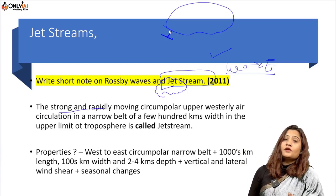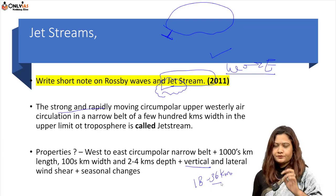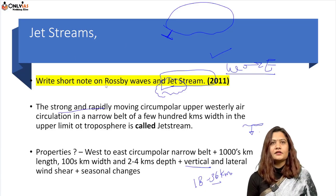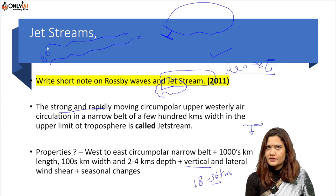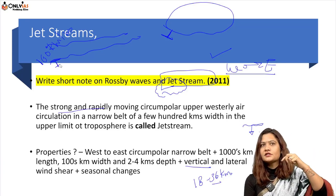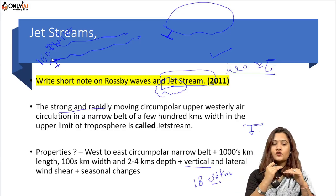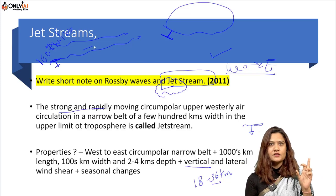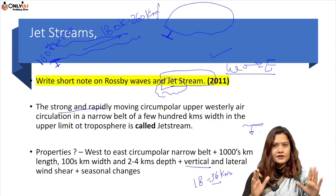There are two important wind shear concepts: vertical wind shear — the jet stream operates at 18–36 km altitude, and within the 5 km depth just below, wind speed changes dramatically (vertical velocity rises sharply). Lateral wind shear — horizontally the speed ranges from 180 to 260 km per hour, varying with the winter season.